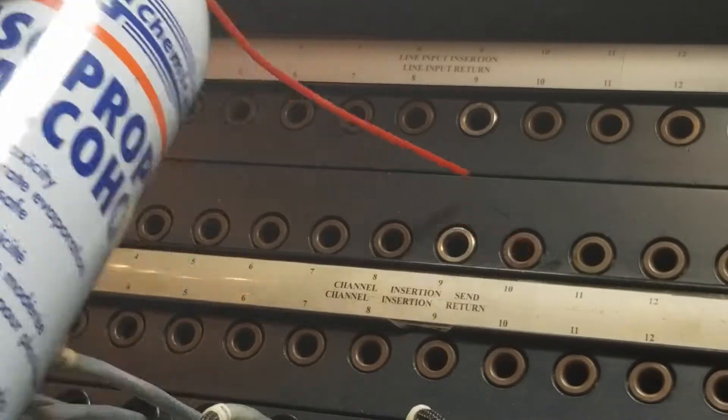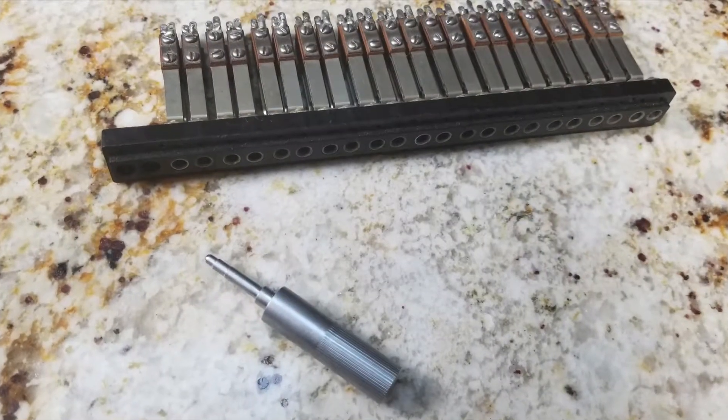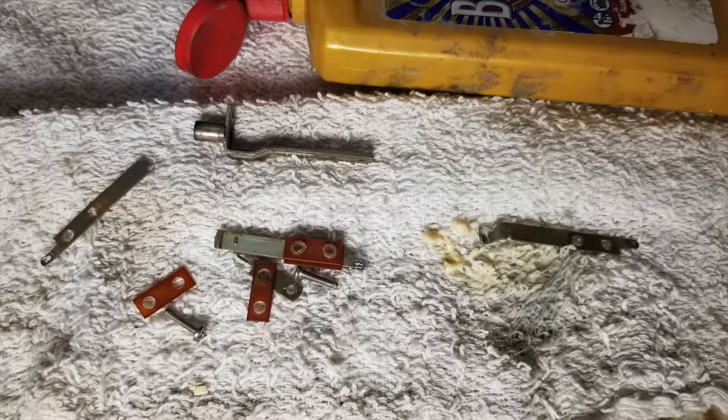Usually, compressed alcohol and several twists of a plug inside the jack will do the trick. But for stubborn dirt, either a burnishing tool is required, or worst case, complete dismantling the point and polishing with metal cleaner and alcohol.